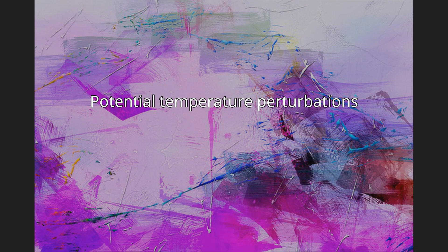Potential temperature perturbations. The atmospheric boundary layer (ABL) potential temperature perturbation is defined as the difference between the potential temperature of the ABL and the potential temperature of the free atmosphere above the ABL. This value is called the potential temperature deficit in the case of a katabatic flow, because the surface will always be colder than the free atmosphere, and the PT perturbation will be negative.